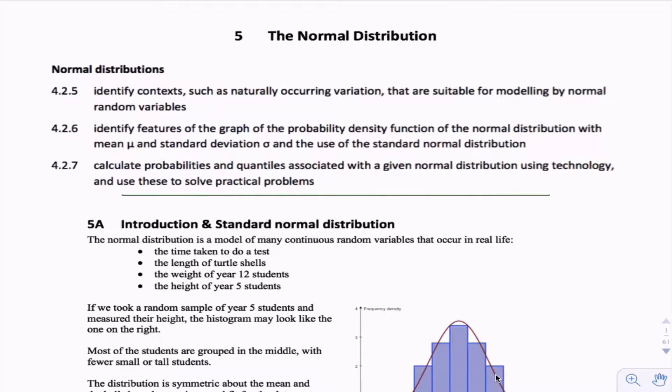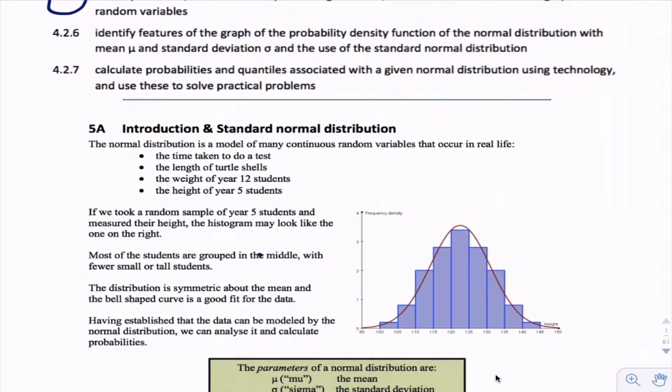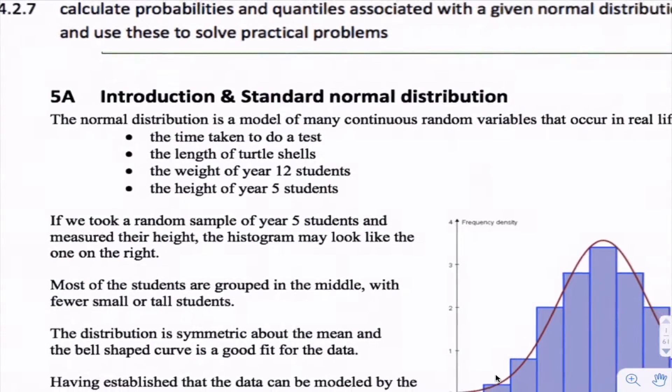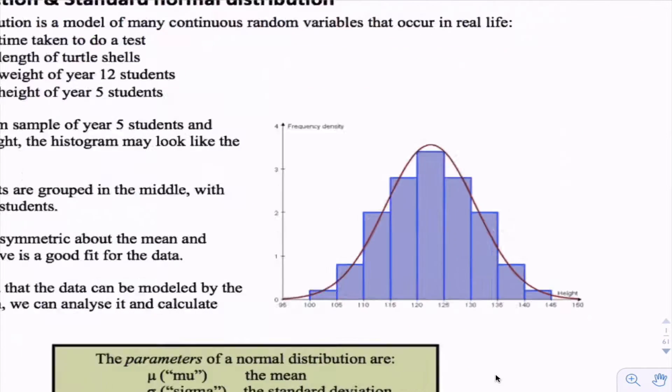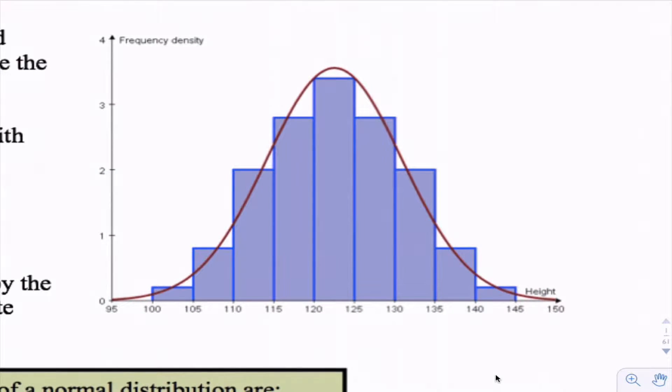Here's the syllabus to start with: identify contexts such as naturally occurring variation that are suitable for modeling by normal random variables. There's so many different situations where a normal distribution is appropriate. It's this bell-shaped curve, also known as the Gaussian distribution after Carl Gauss, a mathematician.